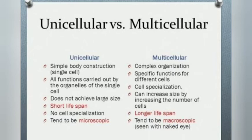Now let us see the differentiation. Unicellular organisms have only a single cell, so they have simple body construction. Multicellular organisms have multiple cells and therefore have a complex organization of the body. All functions are carried out by the organelles of the single cell in unicellular organisms.